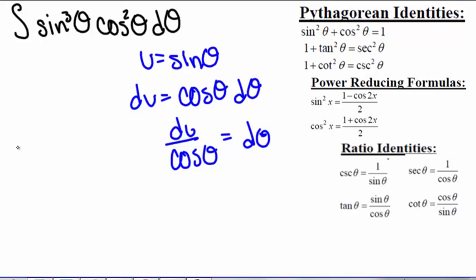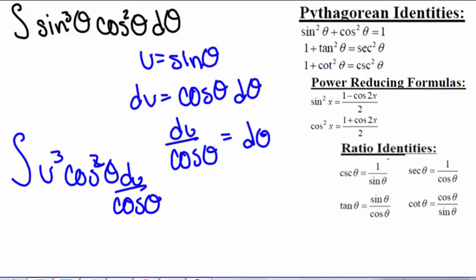So that we have the integral of u cubed cosine squared of theta times du over cosine of theta. One of our cosine of thetas canceled out, but now we have the integral of u cubed cosine of theta du.